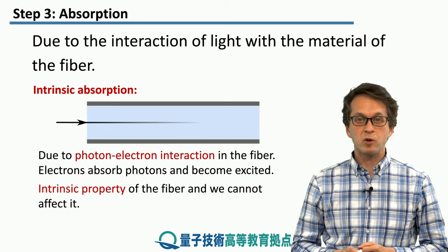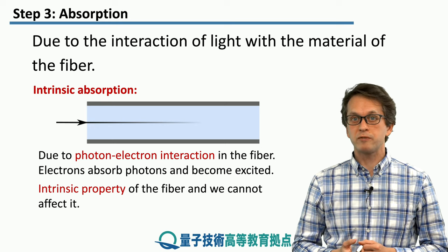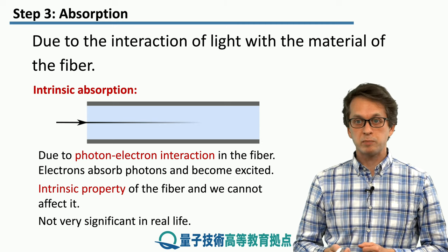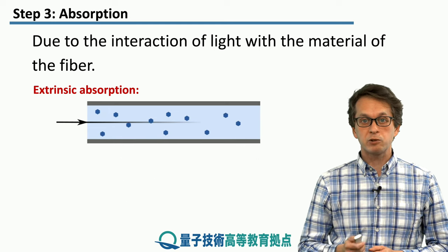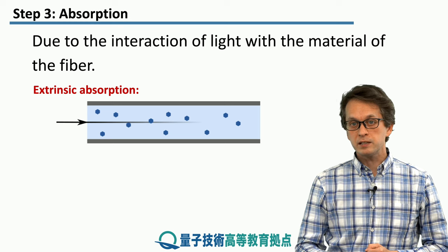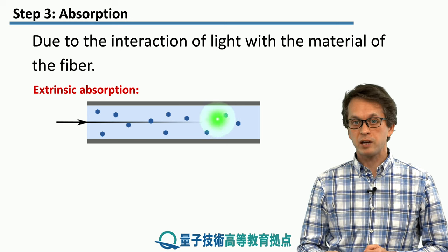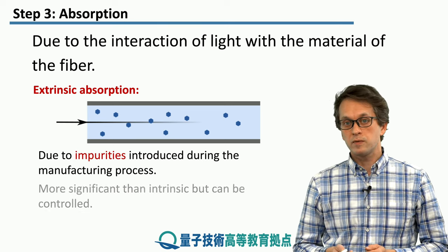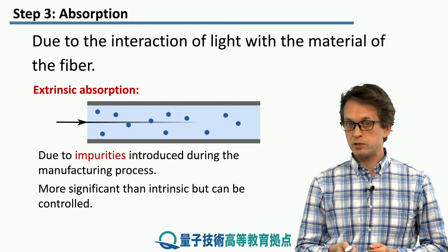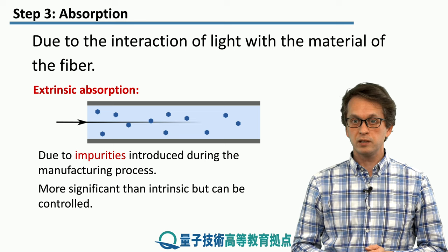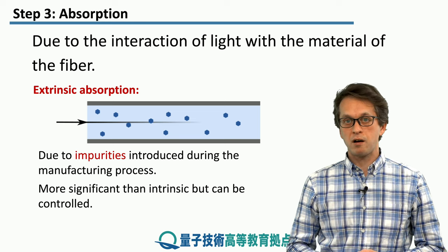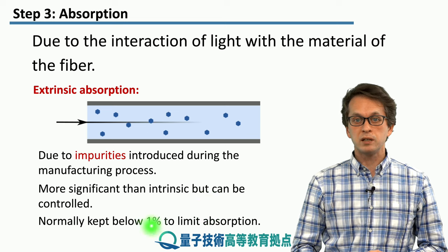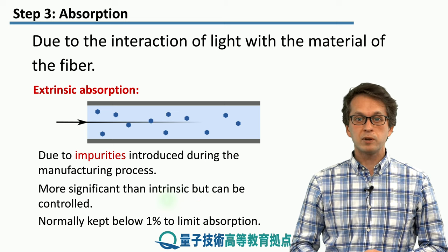This is just an intrinsic property of the fiber and we cannot really affect it — it's something we just have to accept. Luckily, it's not a very significant source of error, especially when we compare it to the other type of absorption, which is extrinsic absorption. This is due to impurities that are present in the fiber, and these impurities are introduced during the manufacturing process. This is a much more significant source of absorption and attenuation, but we can control it by perfecting our manufacturing process. Generally, manufacturers try to keep the amount of impurities in the fiber below 1%.